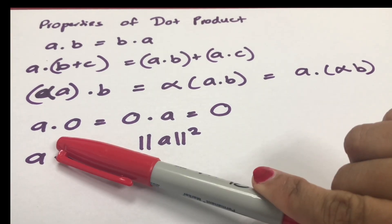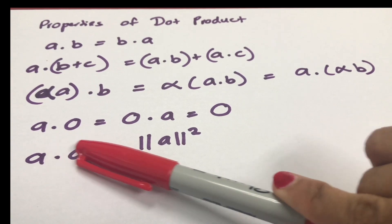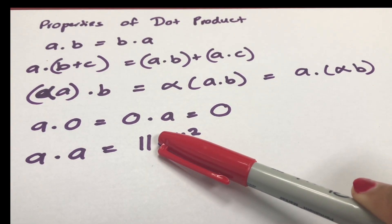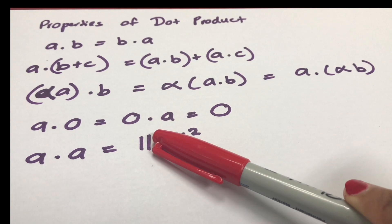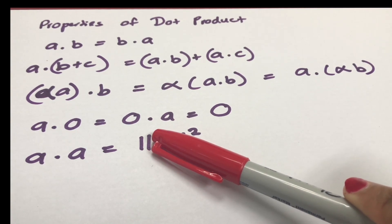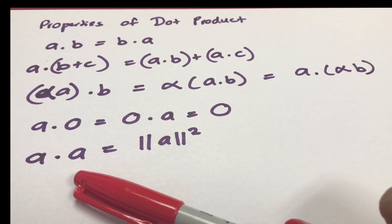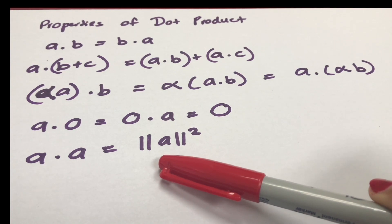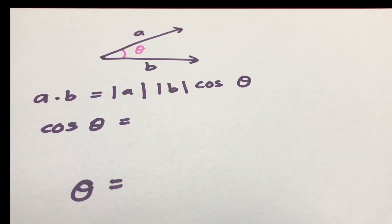The dot product of vector a and 0 is equal to 0, and similarly the dot product of 0 and vector a is equal to 0. The dot product of vector a by itself is simply the magnitude of vector a squared.